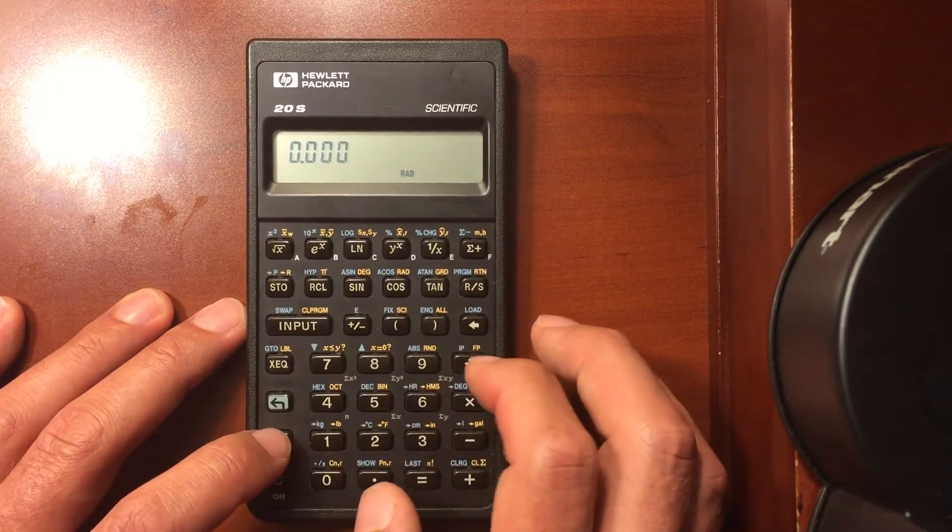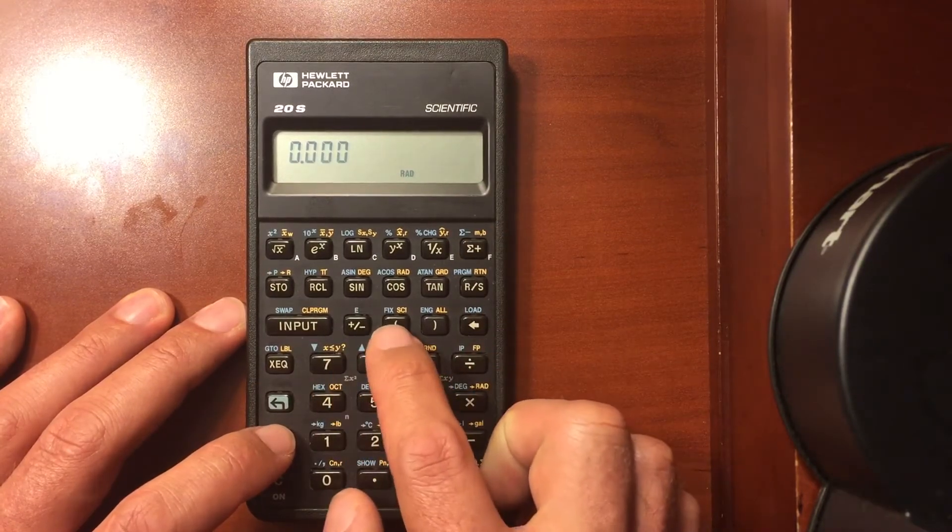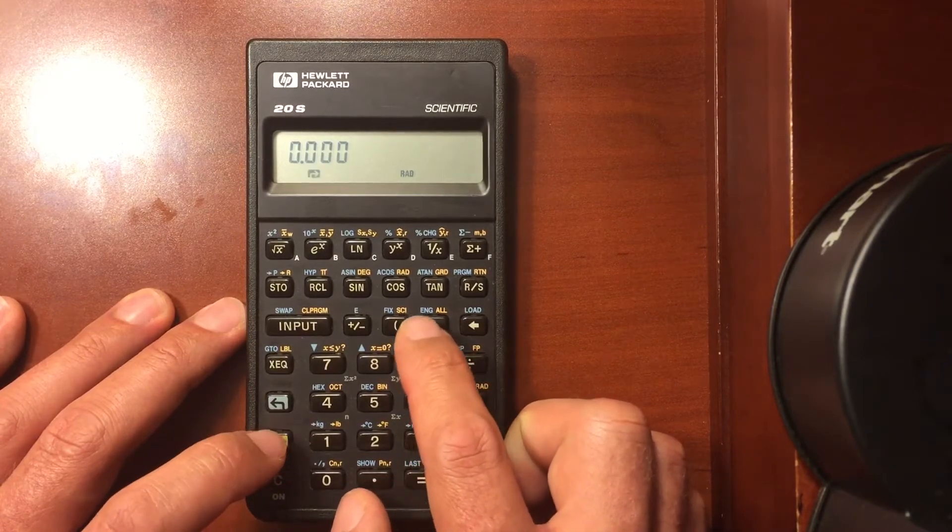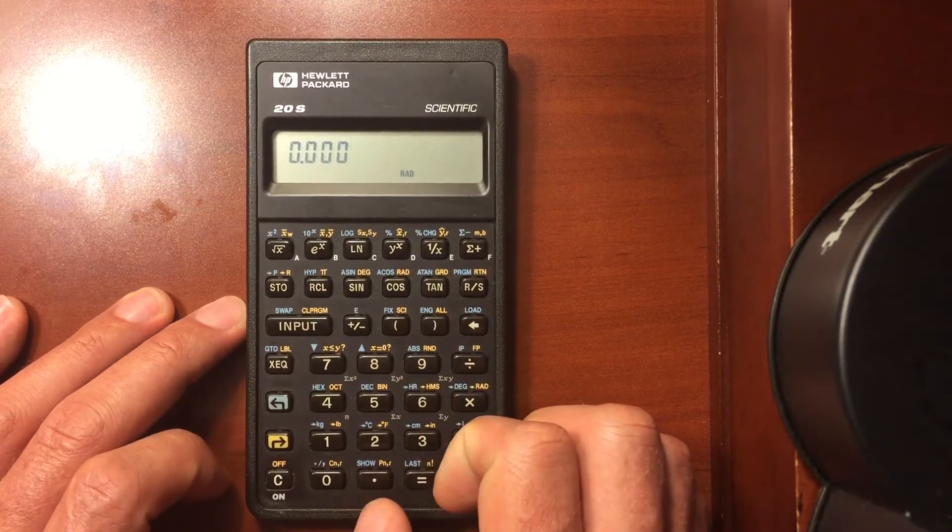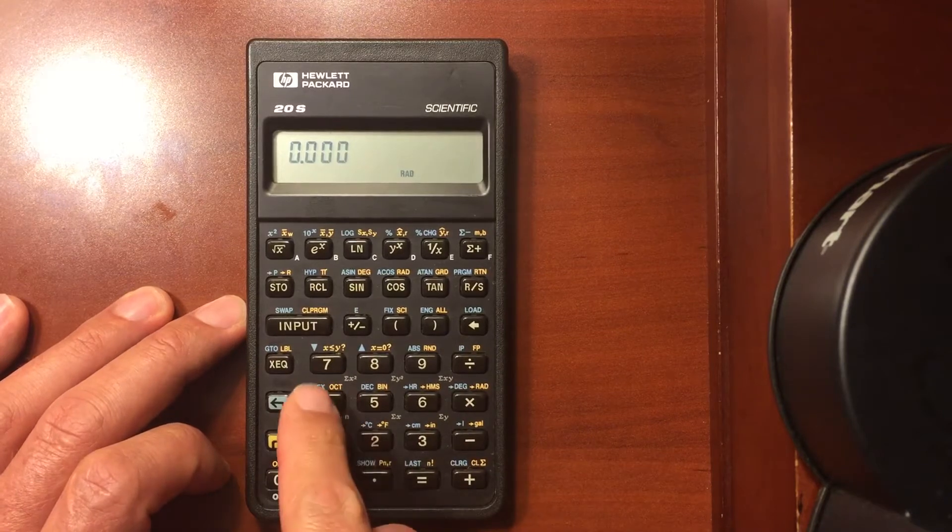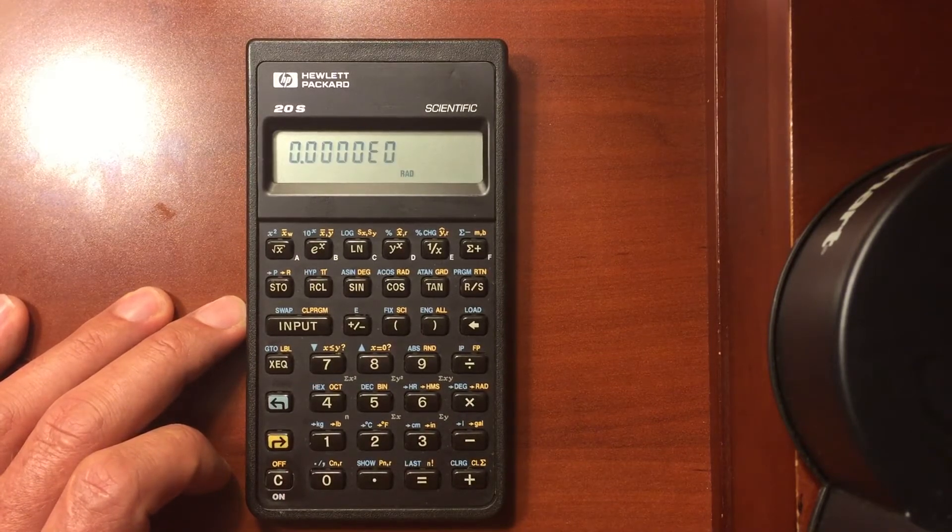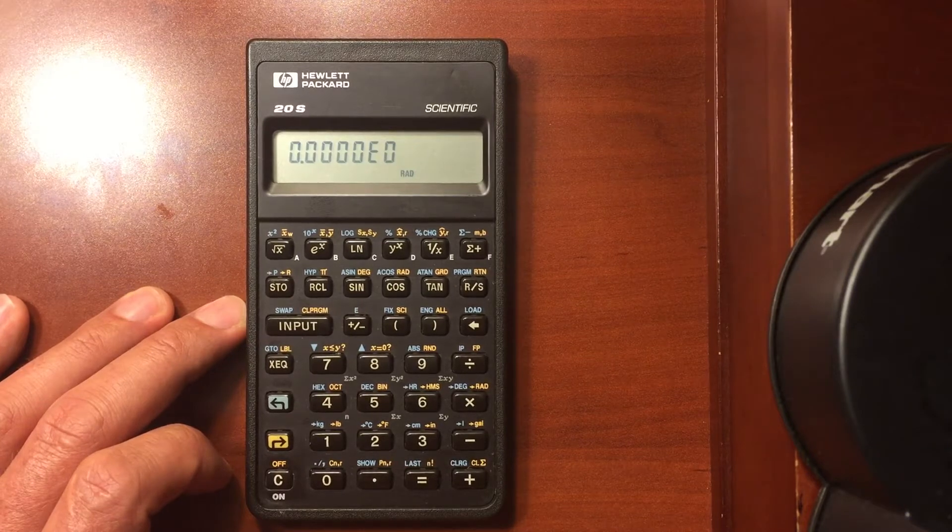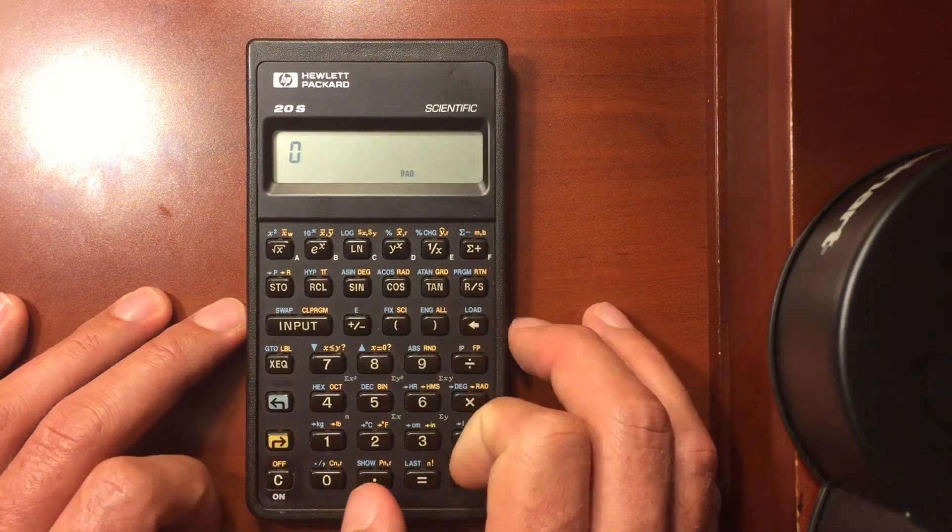Right now I'm in fixed 3 if I want to change it to engineering. I've got fixed, scientific, engineering, or all. So I can change it to engineering. Well, I want engineering and I want four digits. Now I have engineering with four digits. Let's shift that to on.